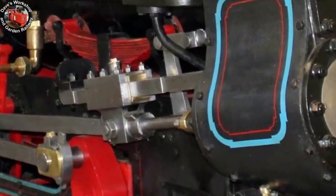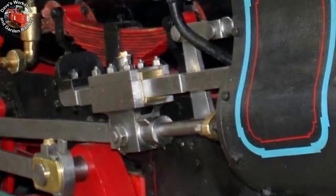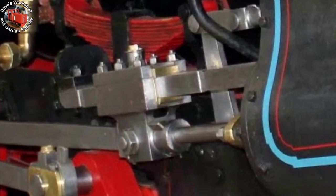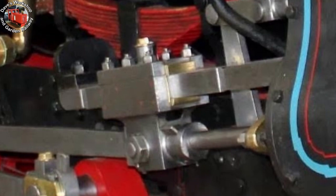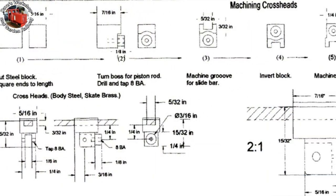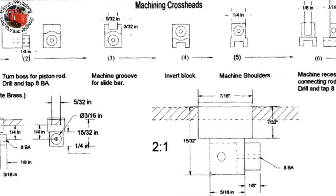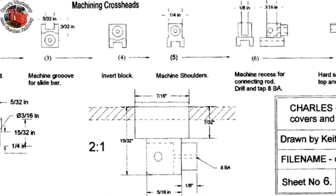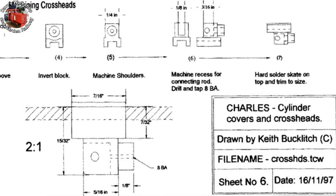Here's the real thing, a lovely piece of steel. These are the crosshead drawings including the machining method and sequence. Very useful. I follow the plan closely.